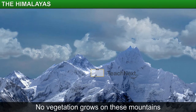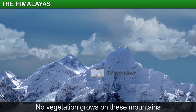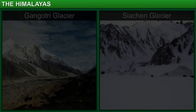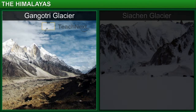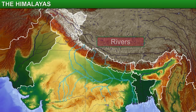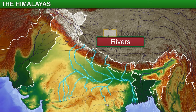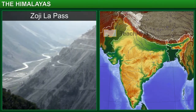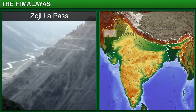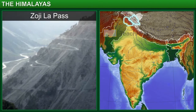As a result, no vegetation grows on these mountains. However, several glaciers, such as the Gangotri and the Siachen, originate from this range. These glaciers feed rivers that form the source of water for a large part of the population. The Zouji La Pass is also situated in the Great Himalayan range. This pass is the only link between Ladakh and Kashmir.